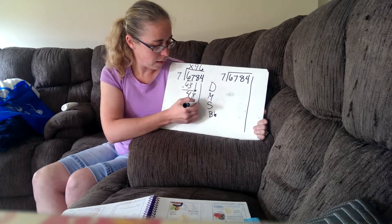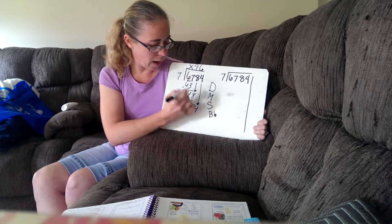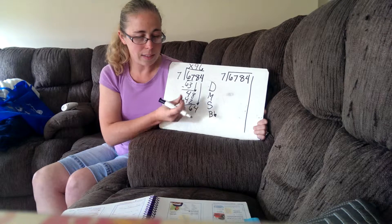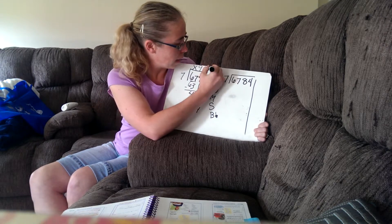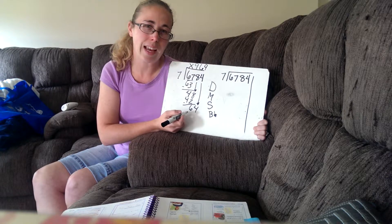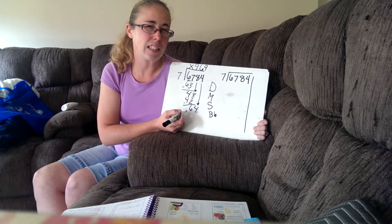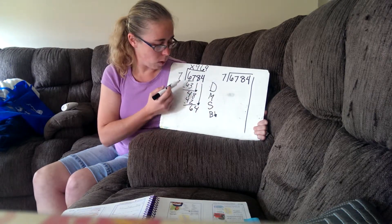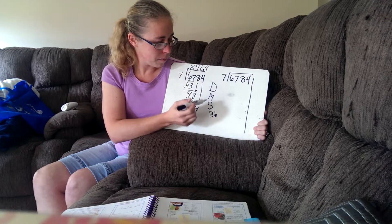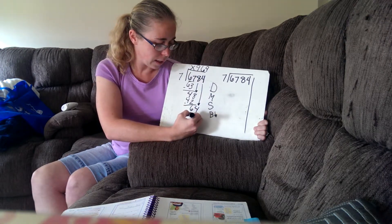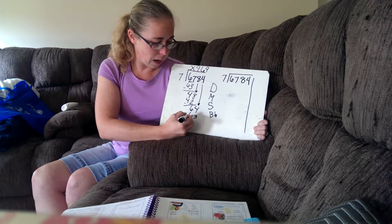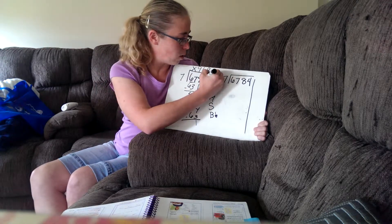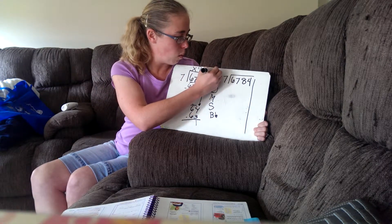Now it's time to bring it on down again. I'm trying to figure out how many times I can get seven into 64. I can do it nine times because when I count by sevens, the closest I can get to 64 without going over is 63. I can use multiplication to help me divide. So, 64 divided by seven equals nine. Now I have to multiply: nine times seven is 63. Time to subtract: 64 take away 63 would be one. So, my answer is going to be 969 remainder one.